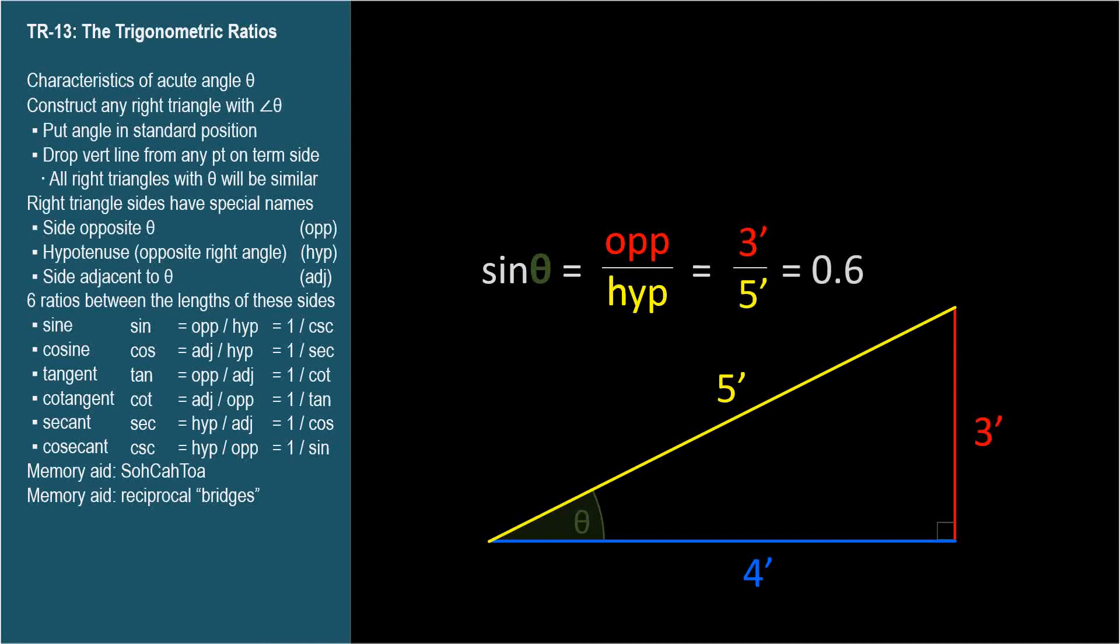Remember, opposite and adjacent depend on which angle you're referencing. For angle alpha, the adjacent side is 3 feet and the opposite side is 4 feet. So the sine of alpha is 4 feet over 5 feet, 0.8.